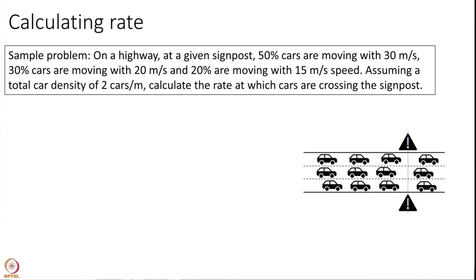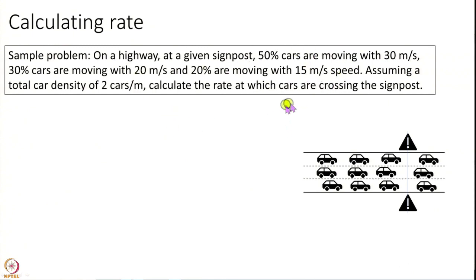Imagine I have a road and on this road you have a lot of vehicles that are moving. You have a distribution of speeds. Think of a highway — many cars are moving, you have different lanes. For simplicity, let us assume you have cars moving at 30 meters per second, 20 meters per second, and 15 meters per second — only 3 speeds. Let us say 50 percent of the cars are moving at 30, 30 percent at 20, and 20 percent at 15 meters per second.